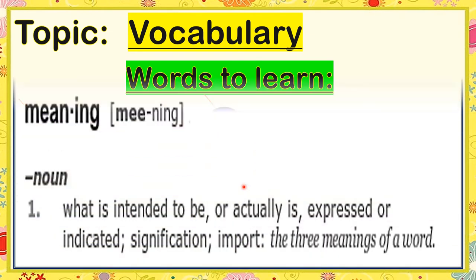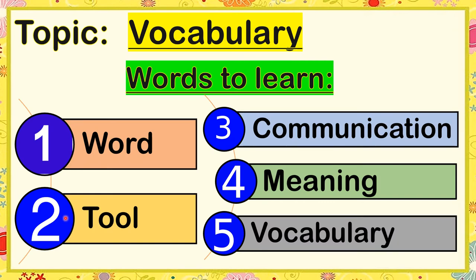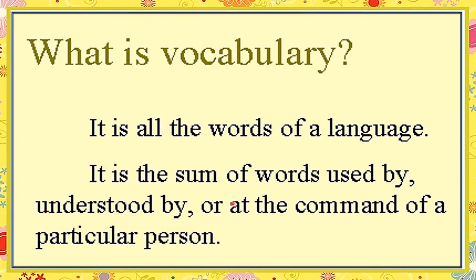Next word: 'meaning.' What do you mean by the word meaning? It means what is intended to be or actually is expressed or indicated — signification, import — the three meanings of a word. So when you say meaning, it is intended to be or it is actually the expression of what you want to say or what you want a person to understand. And the last word: 'vocabulary.' It is all the words of a language — the sum of words used by, understood by, or at the command of a particular person.